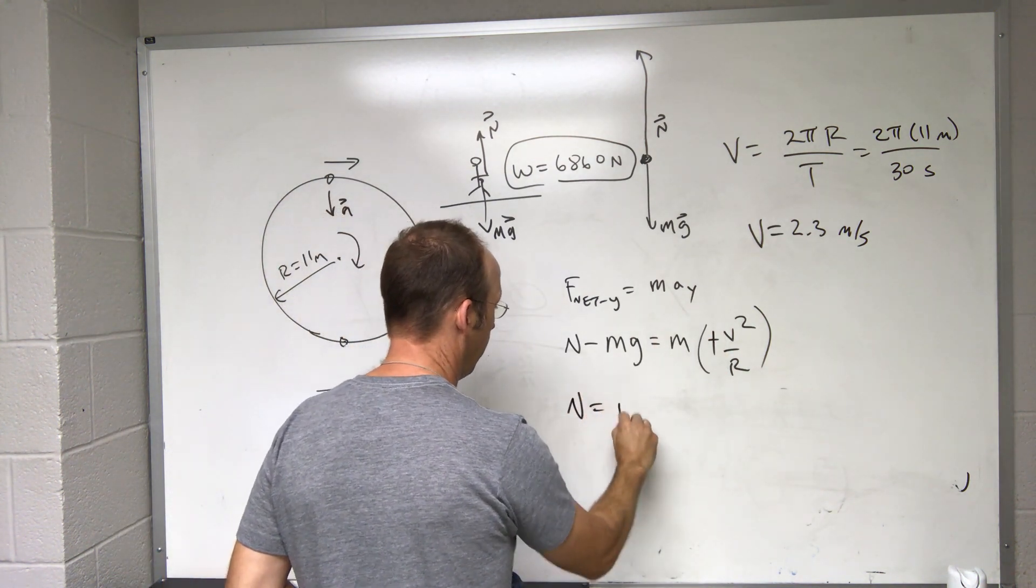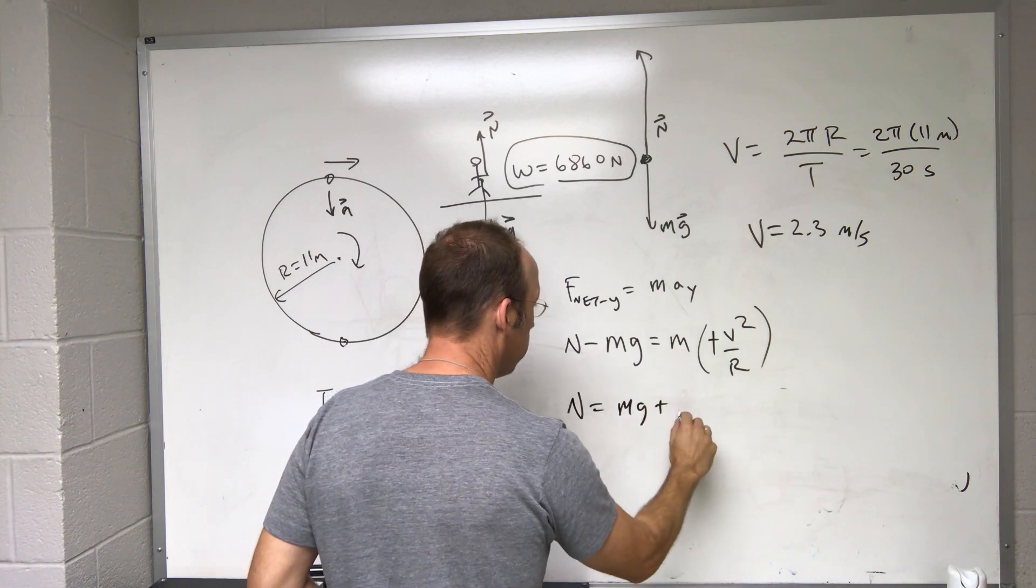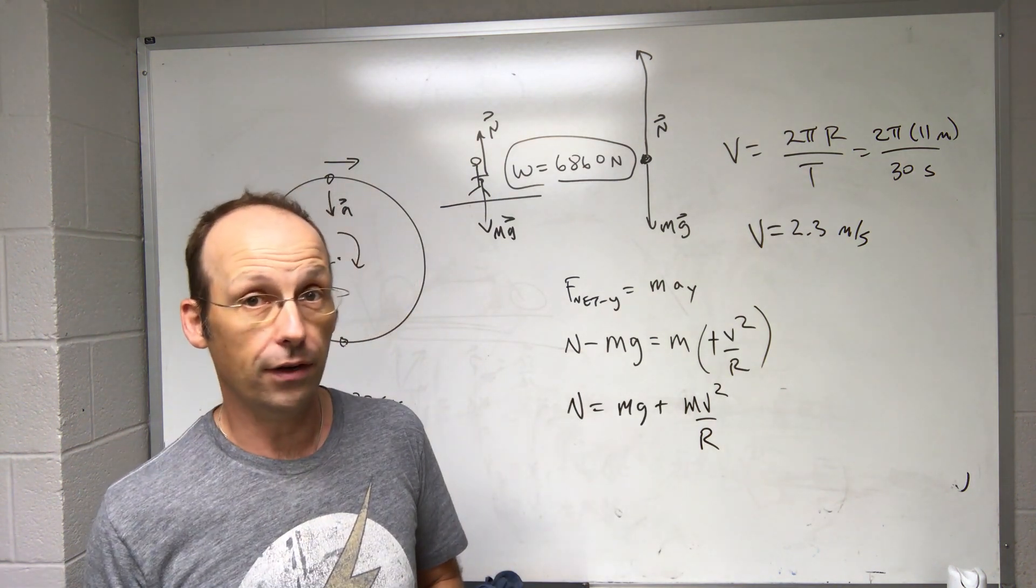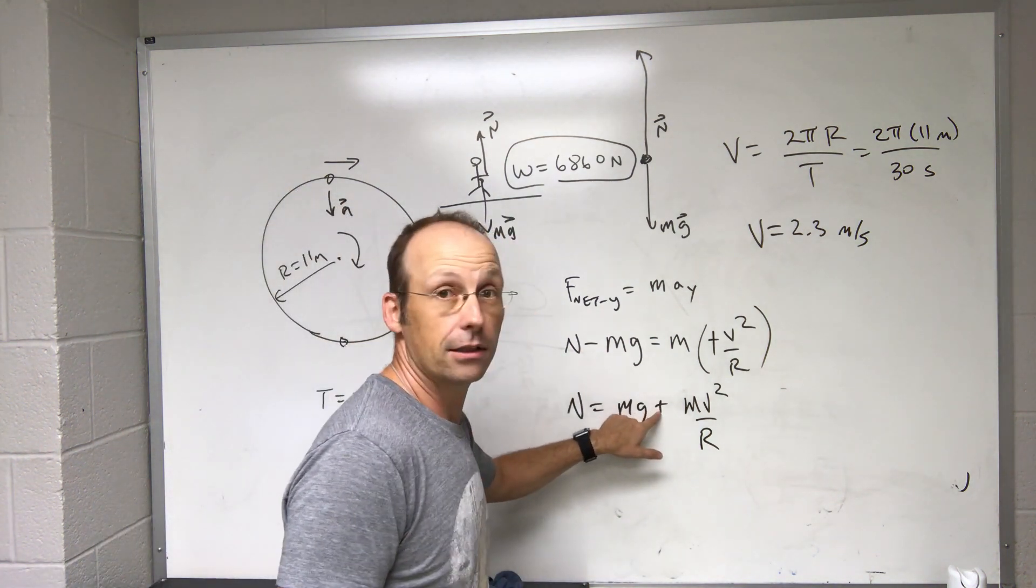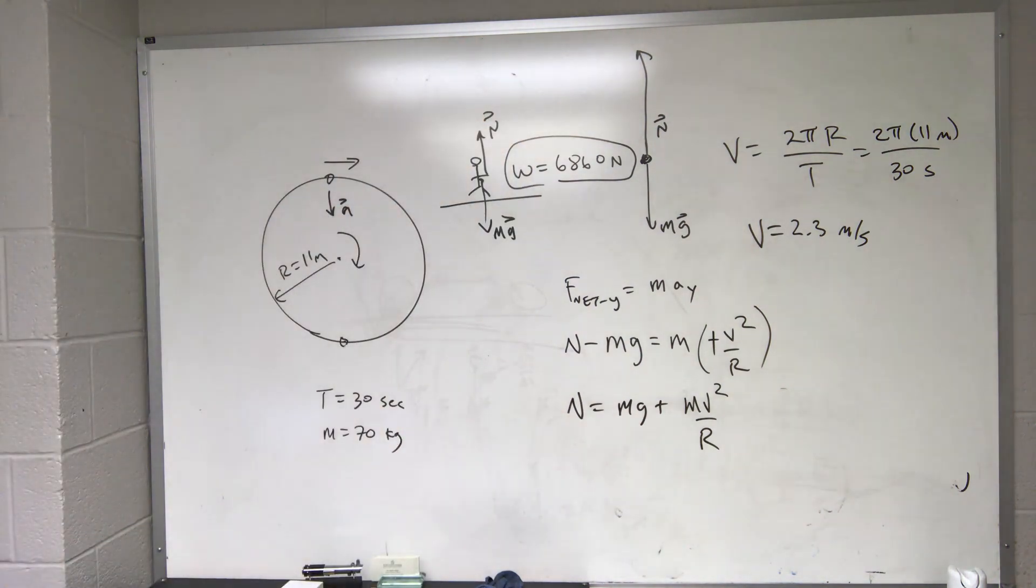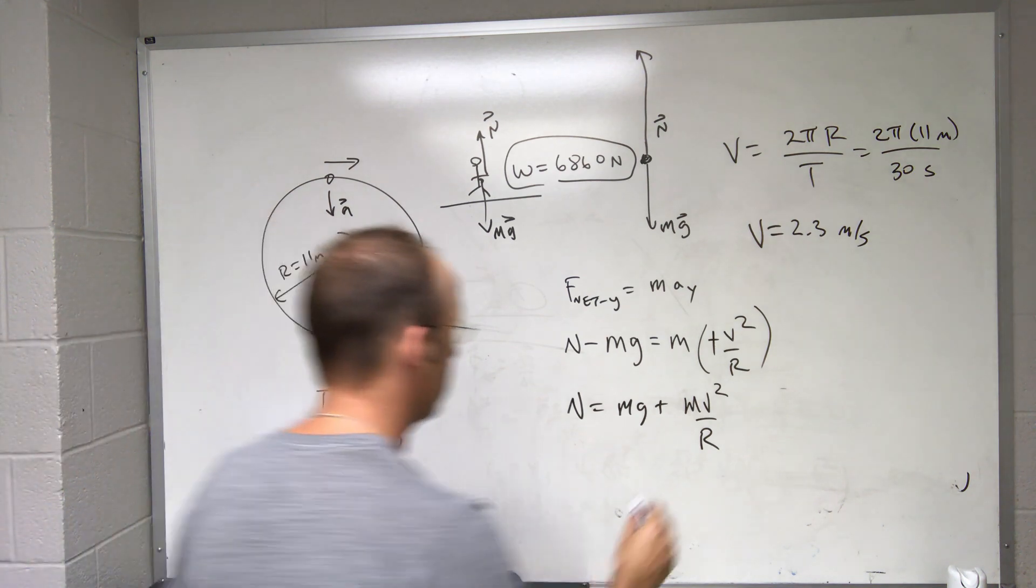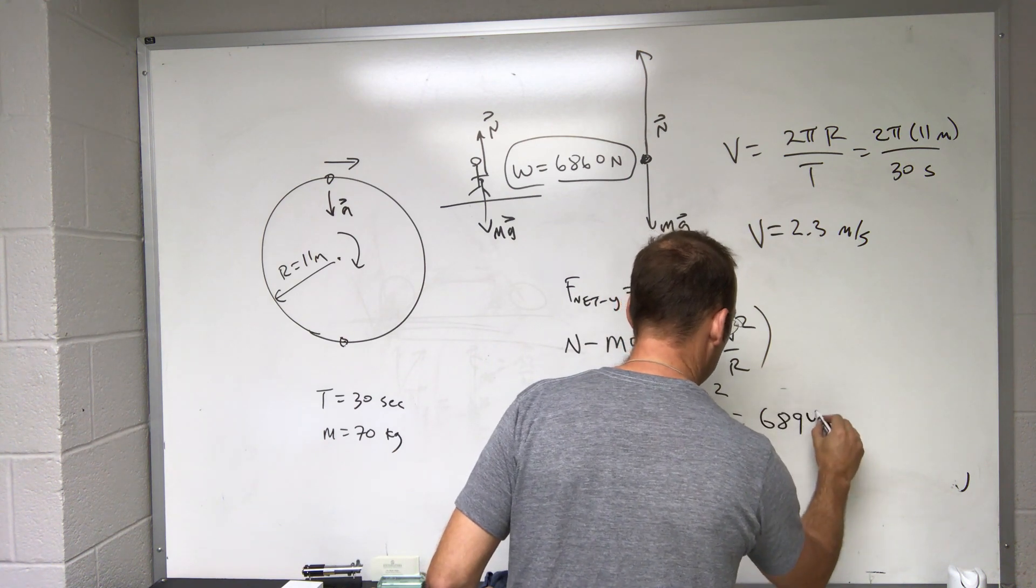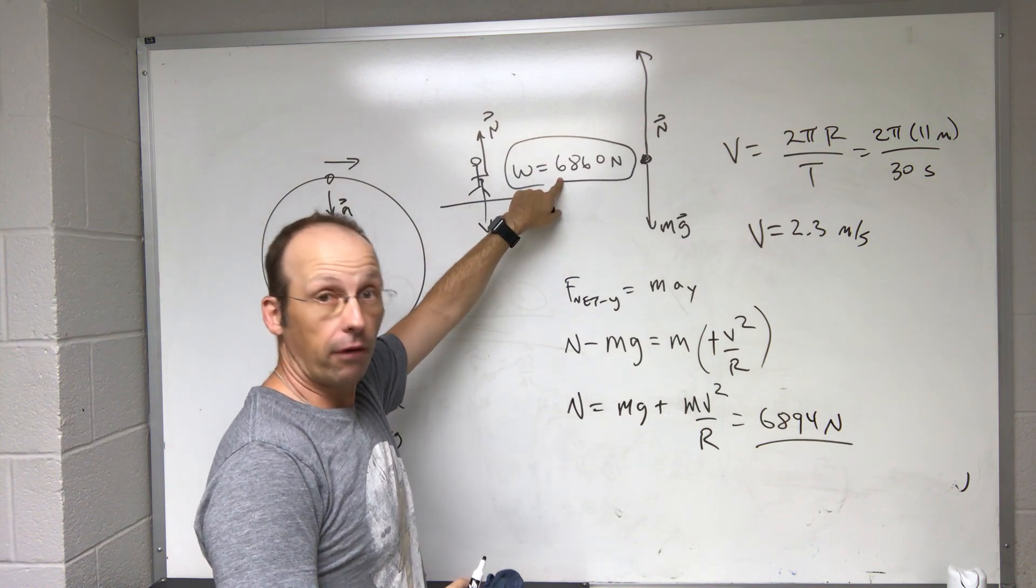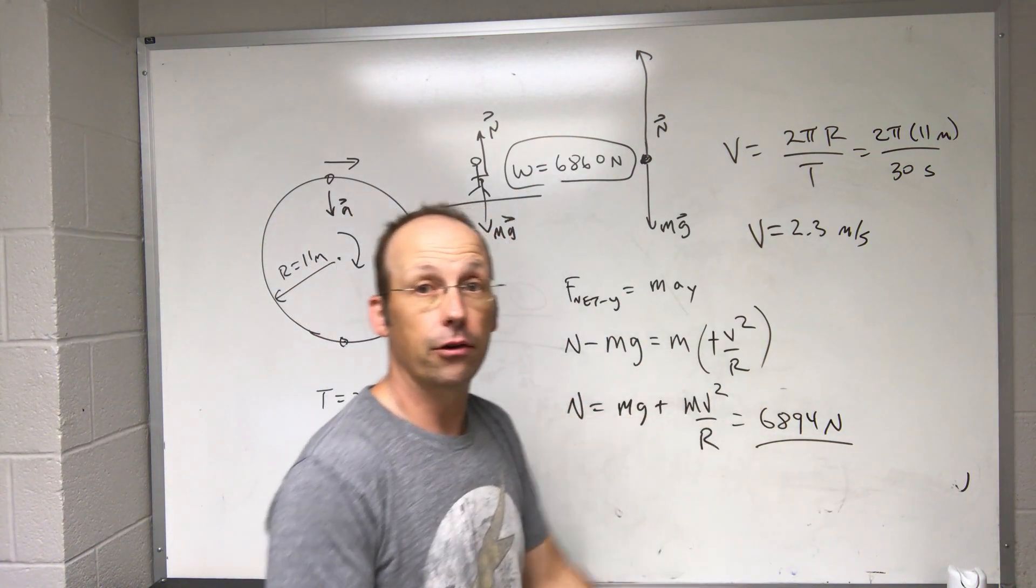So I have the same velocity. And now I have this same equation. If I solve this for n, I get n equals mg plus mv² over r. So the only difference is I'm changing that from a minus to a plus. I'm going to do that in my calculation. So now I get 689.4. So this is greater than the gravitational force, greater than your weight. You feel heavier at the bottom because now you're accelerating up.